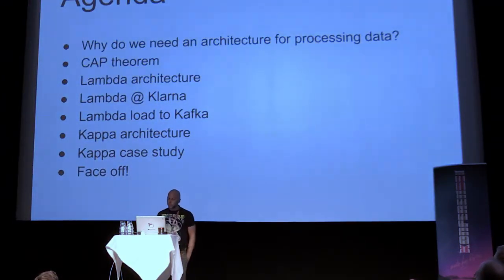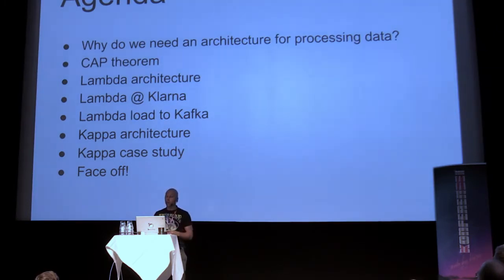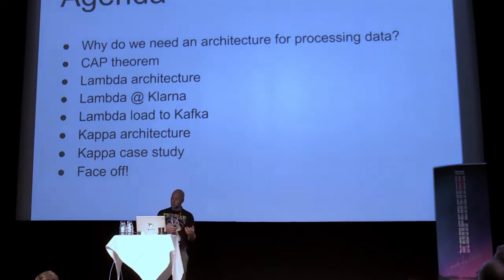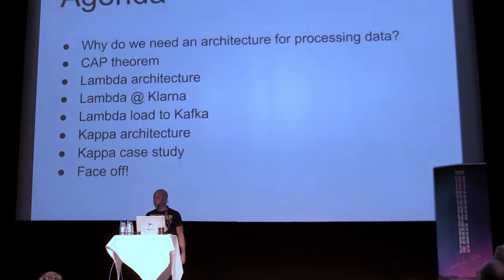Let's look at the agenda. Today we're going to look at why we need an architecture for processing data - why don't we just use regular Postgres or whatever. We're going to look at the underlying theorem of the problem, the CAP theorem, then look at the Lambda architecture, then what we do with Lambda at Klarna. If we have time, we move into a specific problem we solved here at Klarna, and after that we look at the Kappa architecture, which is a runner-up in these processing architectures. Then a face-off between these two architectures at the end.